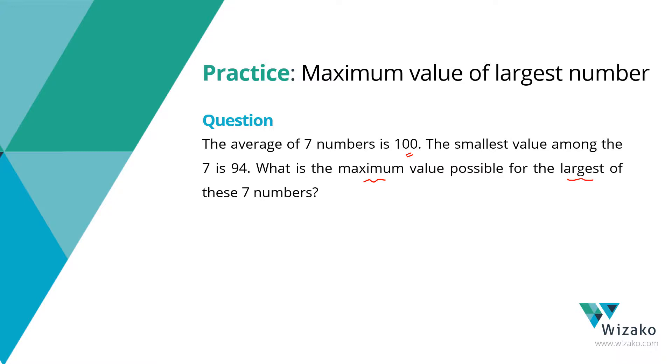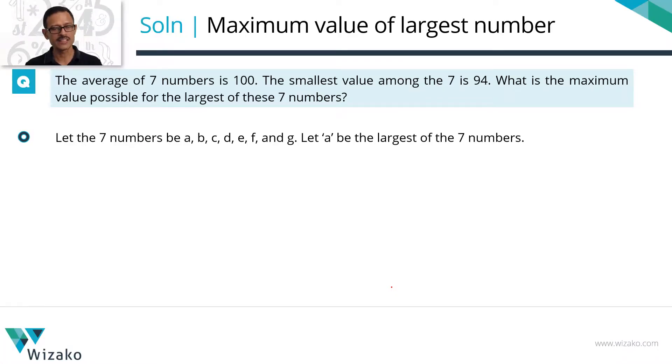Let's start in a very systematic fashion. Let's start by assigning variables to these 7 numbers. Let's say these numbers are A, B, C, D, E, F, and G. One of these numbers is the largest number. Let's say A be that largest number.